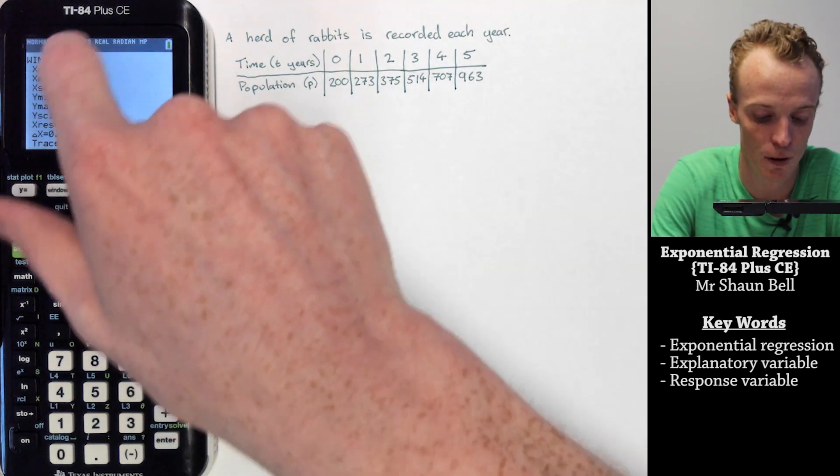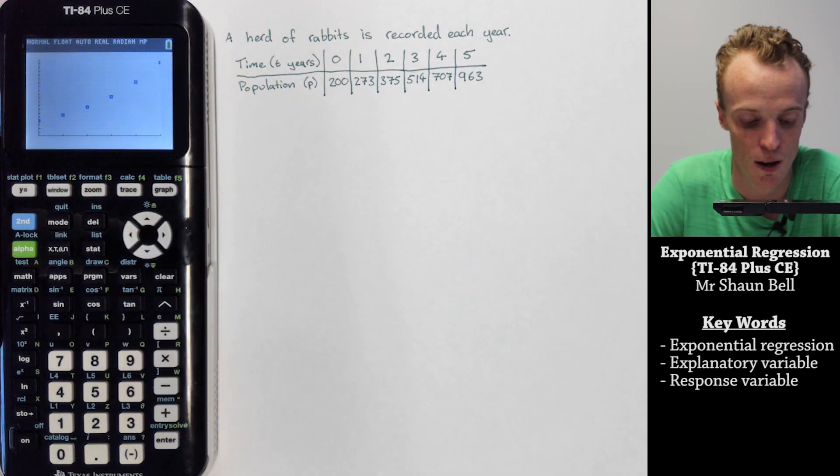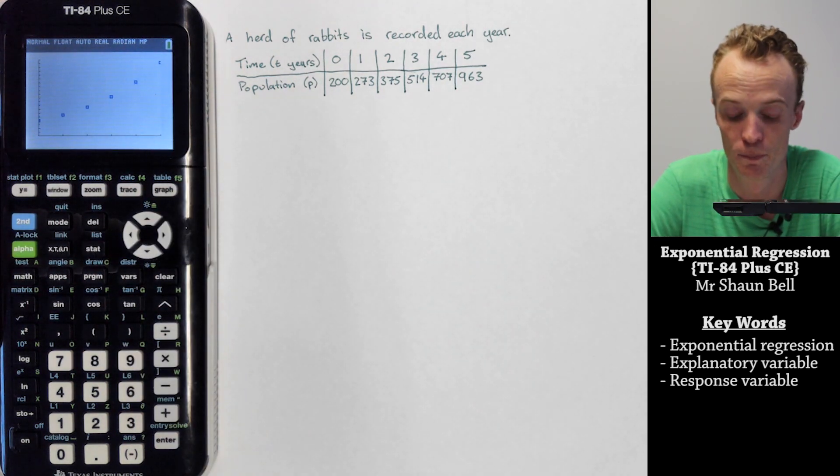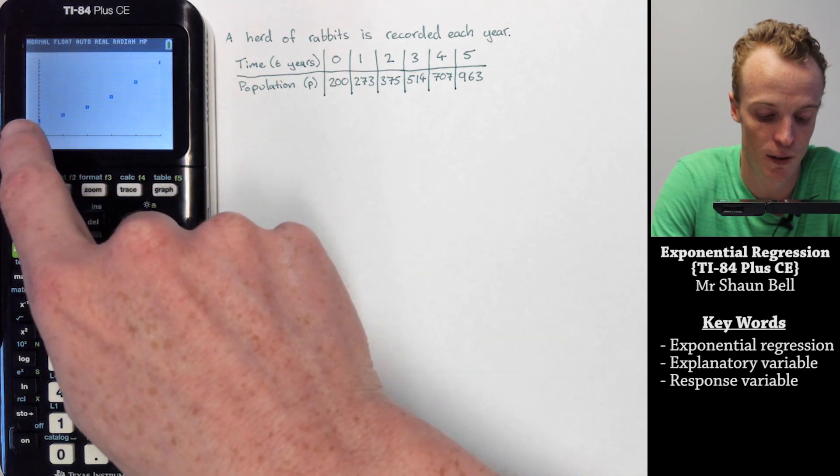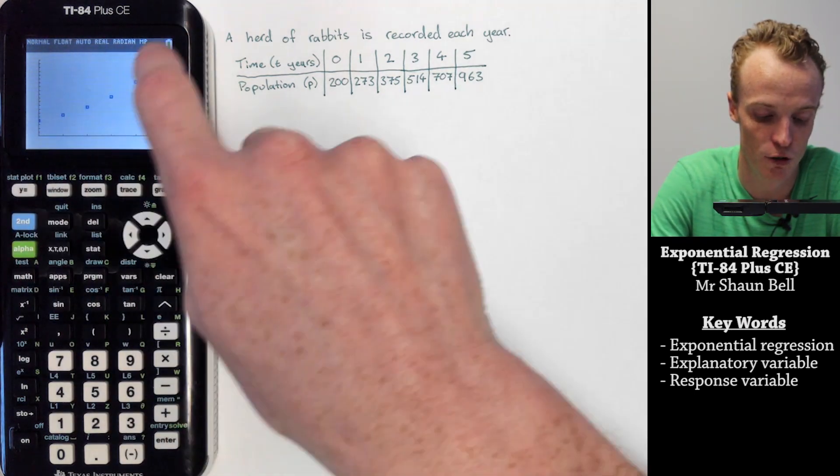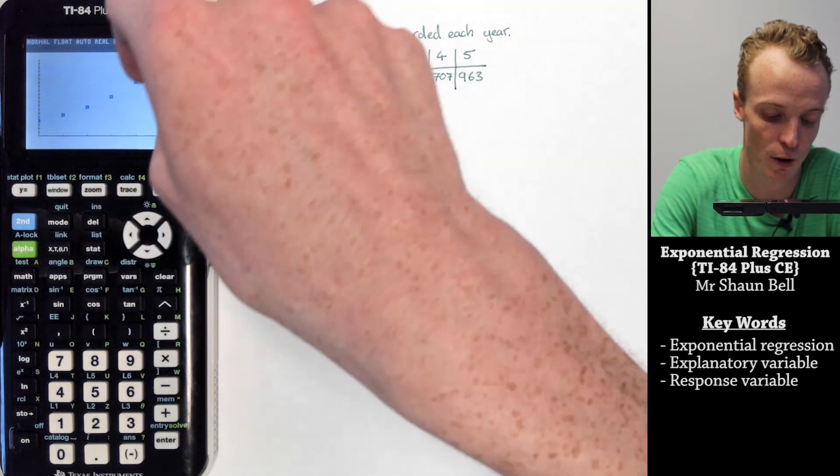Now I've set up my window, I'm going to graph this and I'll get a graph that looks like this. As you can see in this graph, it isn't necessarily a linear relationship anymore. It's got this slight curve to it.